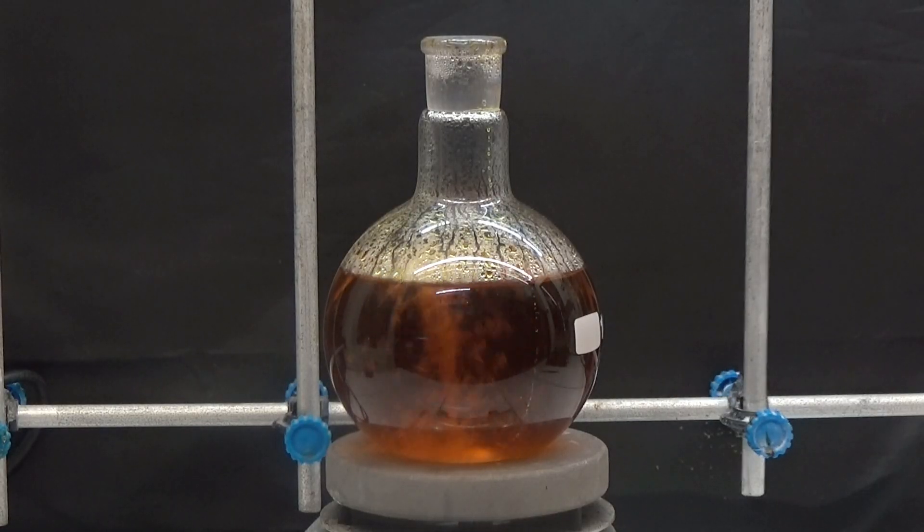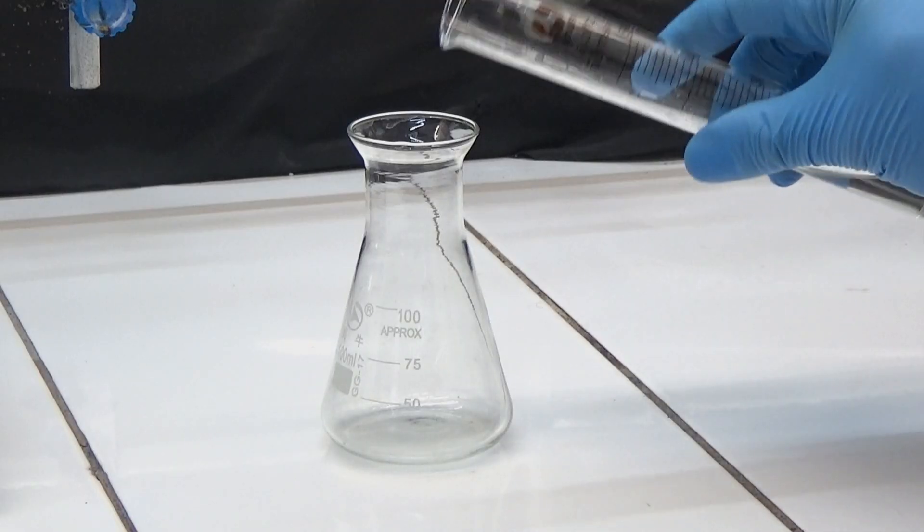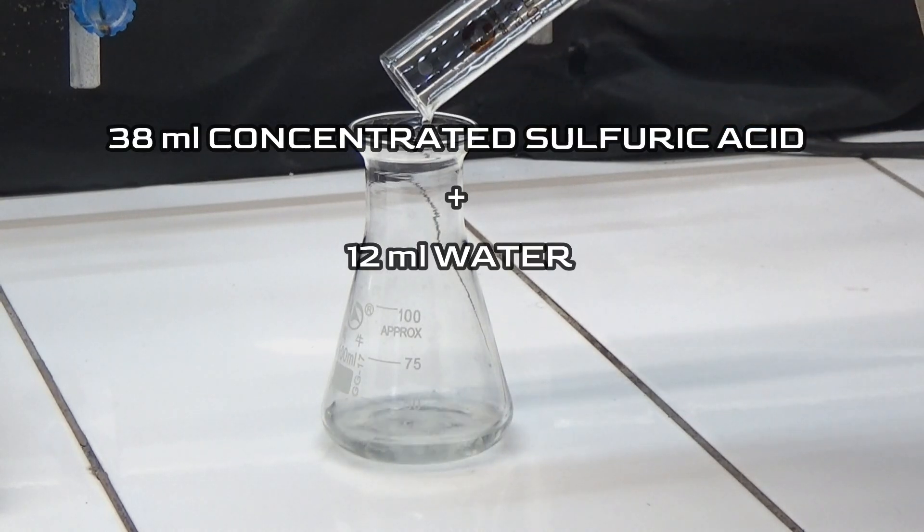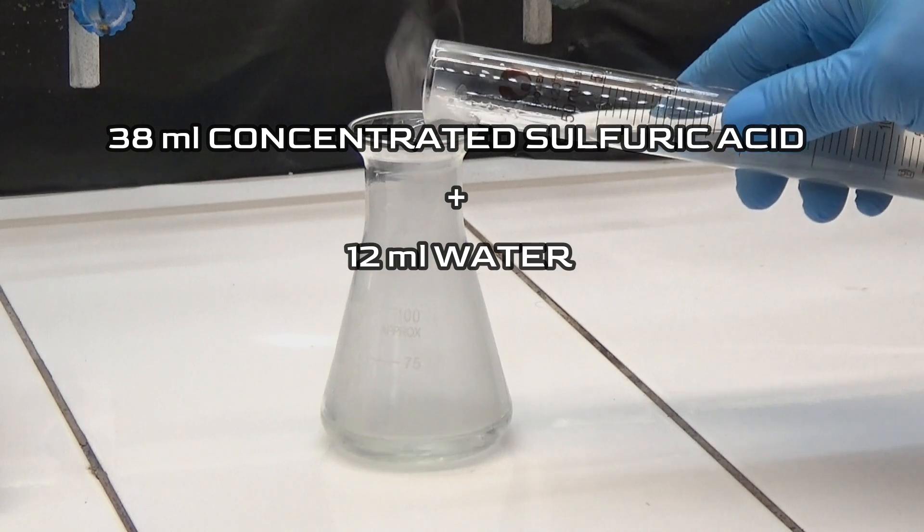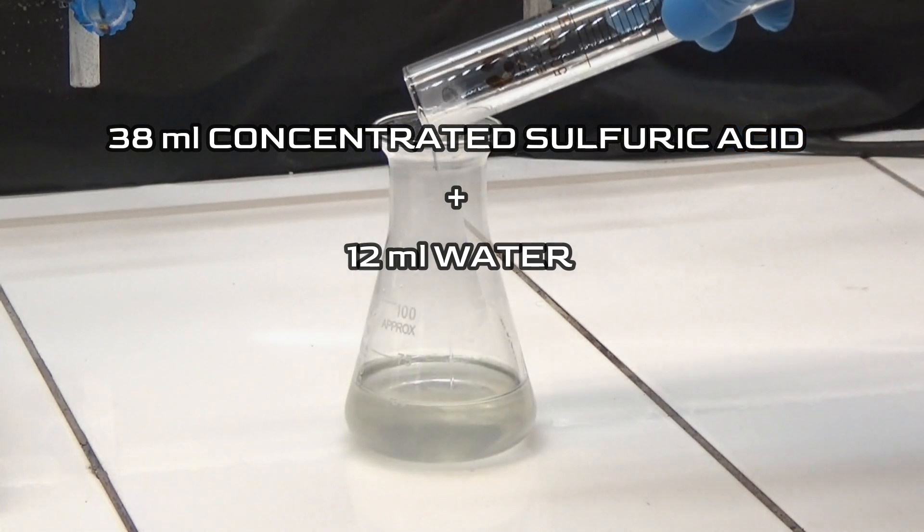Boil for 10 minutes to remove volatile substances such as ethyl acetate, ether, and alcohol. While boiling the solution, we prepare diluted sulfuric acid by mixing 38ml of concentrated sulfuric acid with 12ml of cold water.